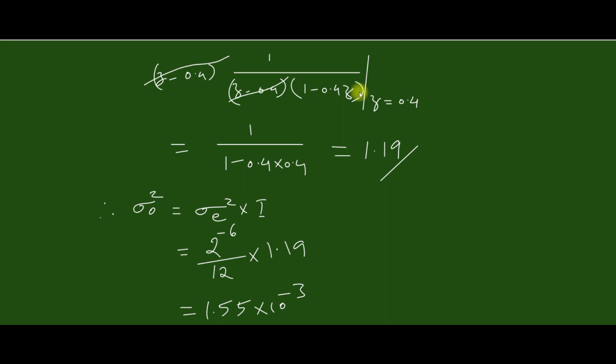Substituting z = 0.4 we get 1.19. So the output noise power is σ_o² = σ_e² × I. Computing, we will get 1.55 × 10⁻³. So this is our final result. Thank you.